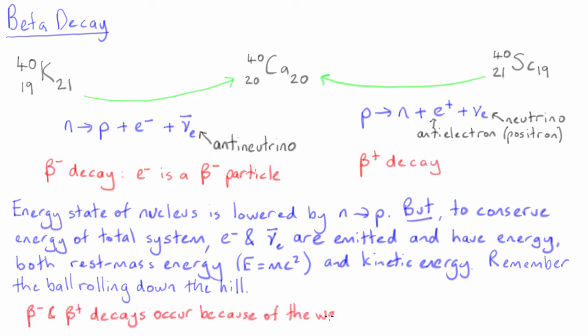Similar to the ball on the hill, a force must be involved to drive these physical processes. In fact, beta-minus and beta-plus decays are a consequence of the weak nuclear force.